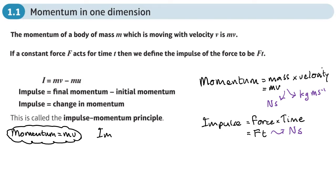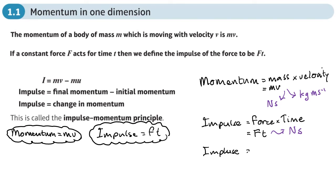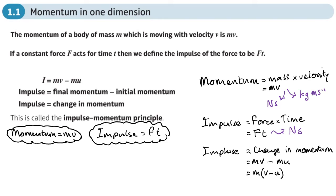Impulse is a force acting on an object over a period of time — the larger the force or the longer the time, the bigger the impulse. Our second formula is: impulse equals Ft. Impulse can also be measured as the change in momentum, so impulse equals change in momentum — that's the momentum after a certain action has happened minus the momentum before. You can factorize this as m(v − u). This is called the impulse-momentum principle, also measured in newton seconds.